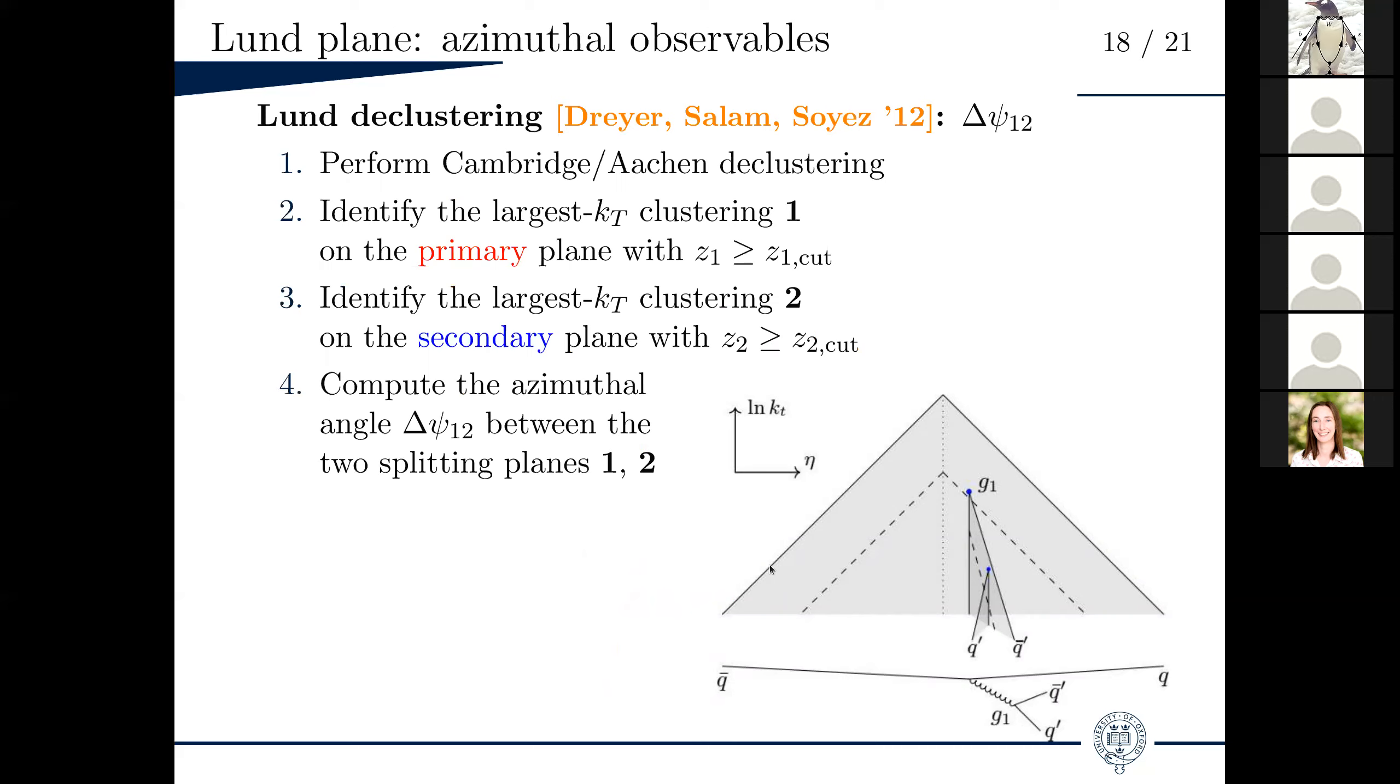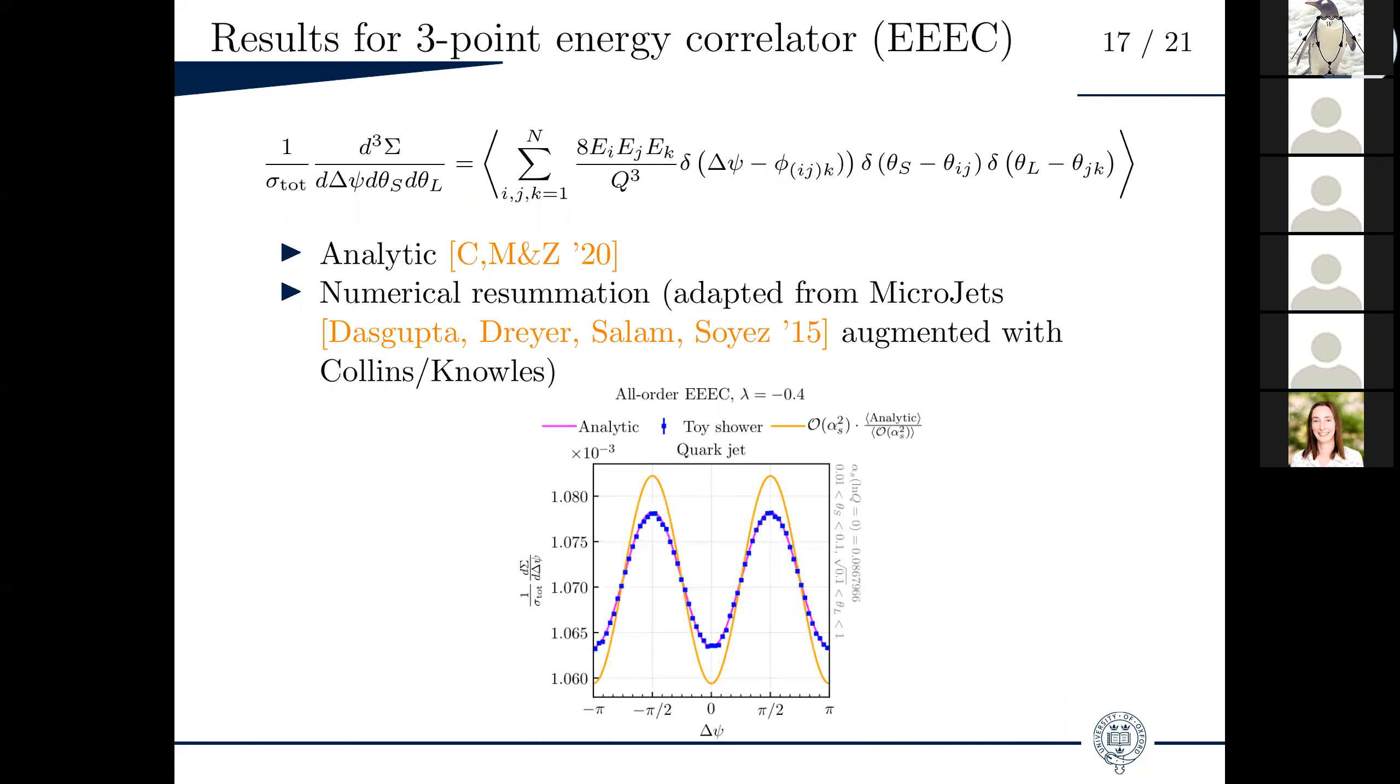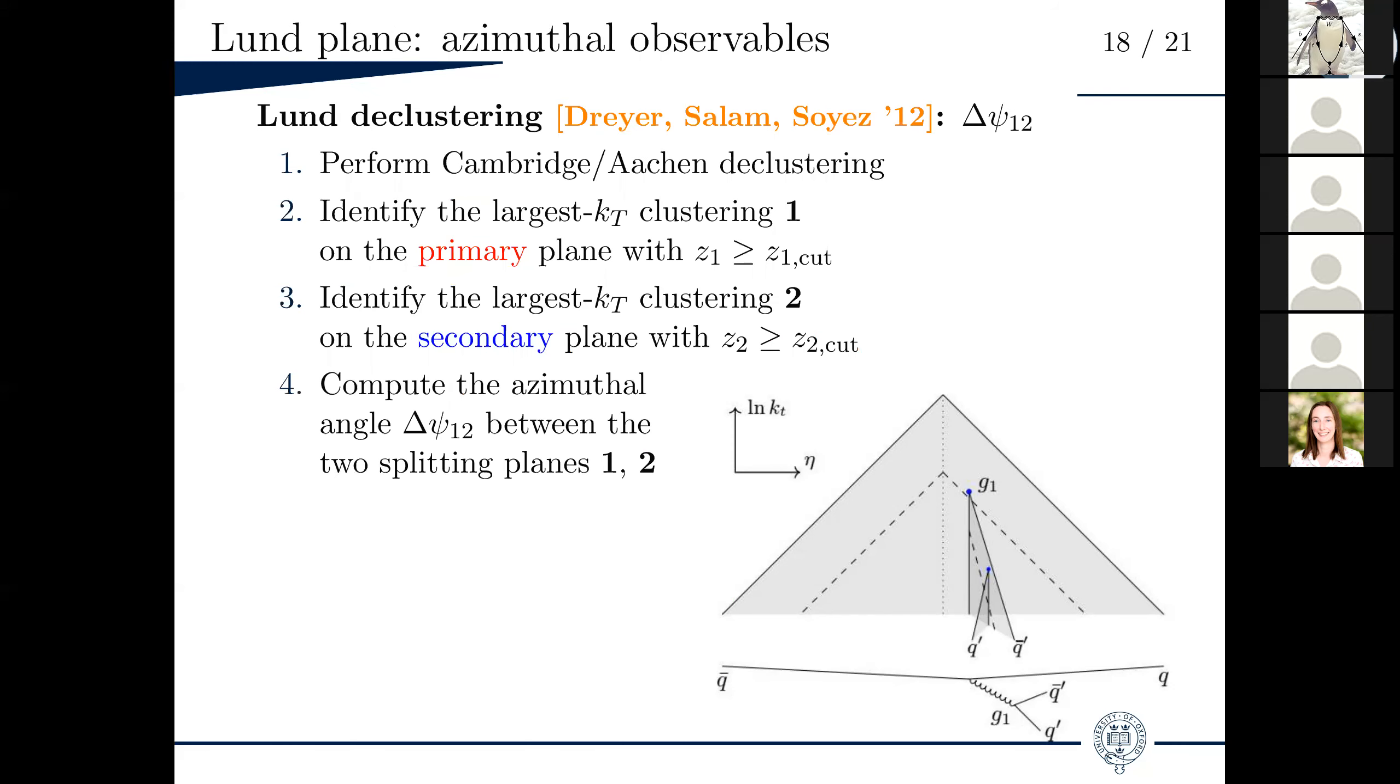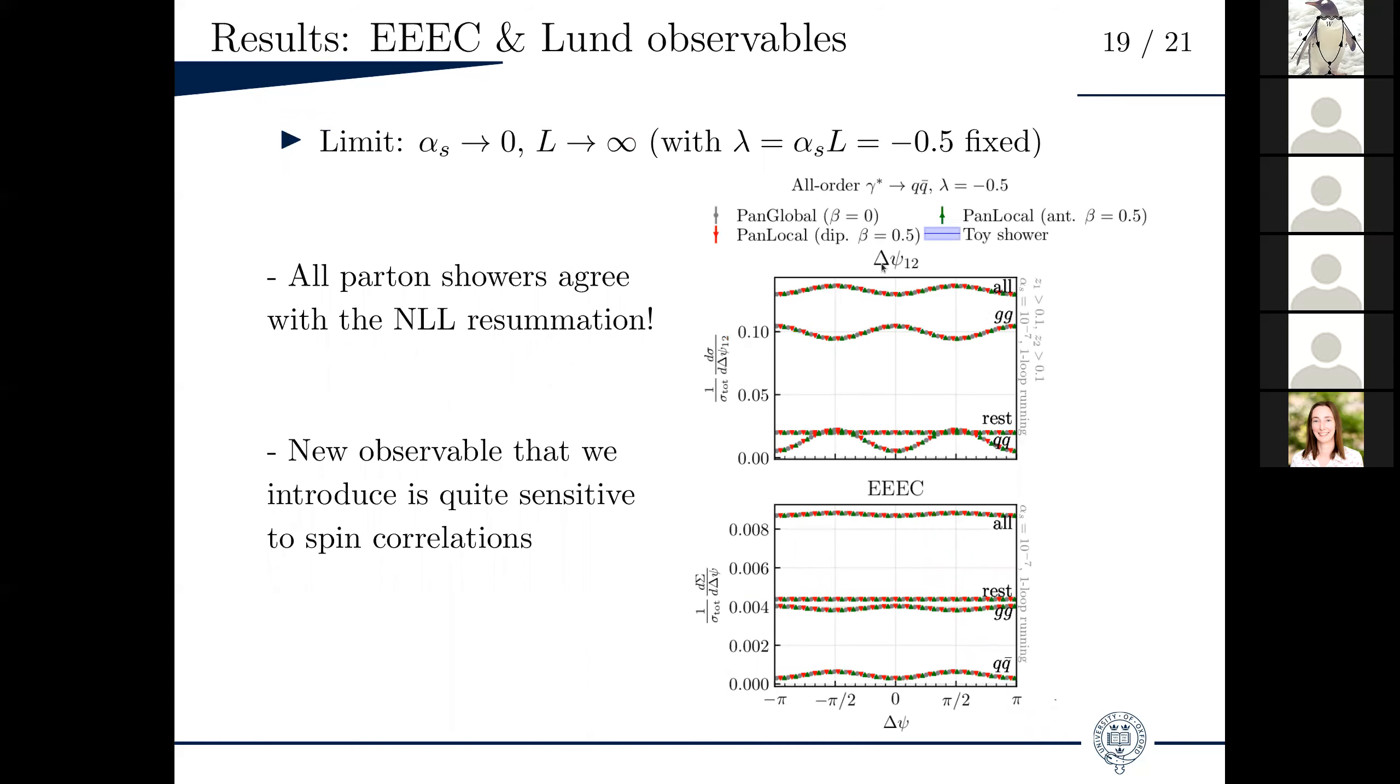But in the meantime, we had already devised an observable that was sensitive to spin correlations, which we call delta psi one two. Again, it's not important to understand how it's constructed, but it's inspired by the Lund plane picture. As you will see, it is sensitive to spin correlations. The question was whether our observable was more sensitive to spin correlations than this EEEC. And also to see whether we were able to resum it. The final plots are shown here. You see our delta psi one two observable and the EEEC on the bottom for several PanScales showers and for the toy shower. So you don't see the toy shower because it lies exactly underneath the points. This was a way of, first of all, validating our results, our implementation in our showers. And second of all, making a statement about some interesting phenomenology. You see by eye that this delta psi one two observable is relatively more sensitive to spin correlations than the EEEC.